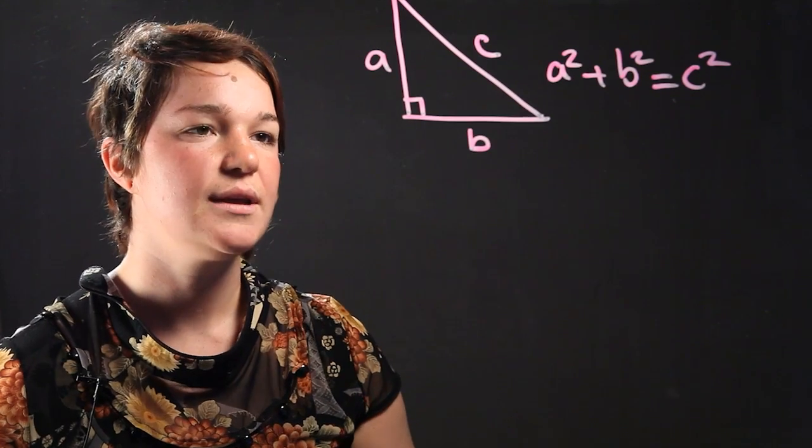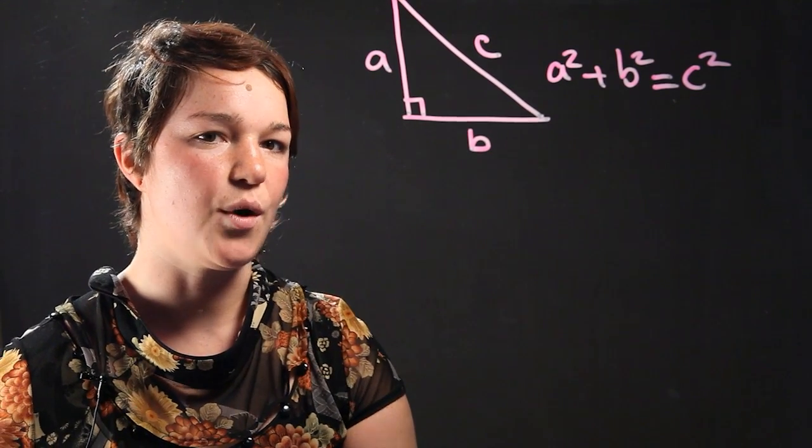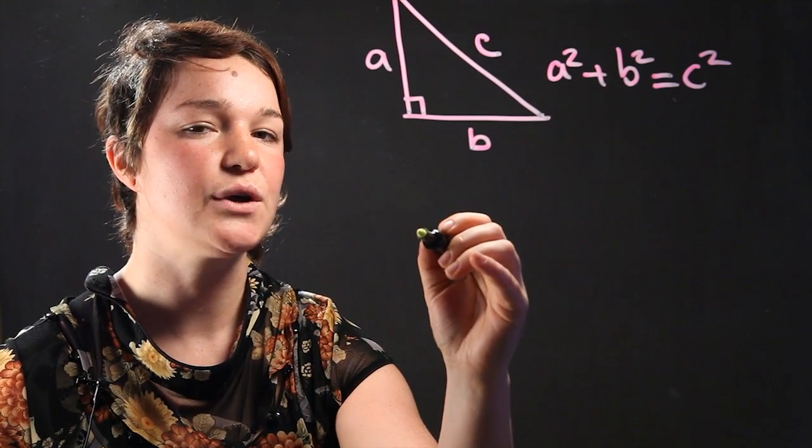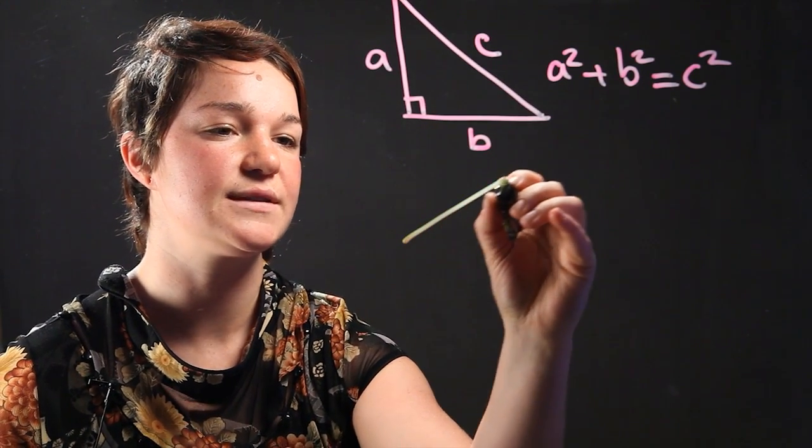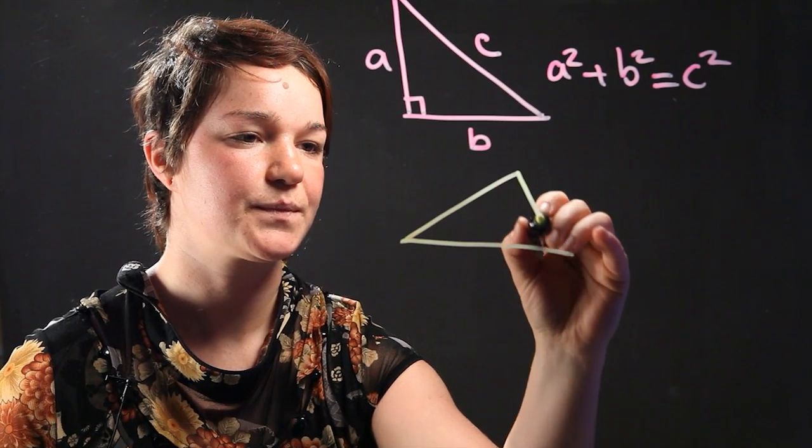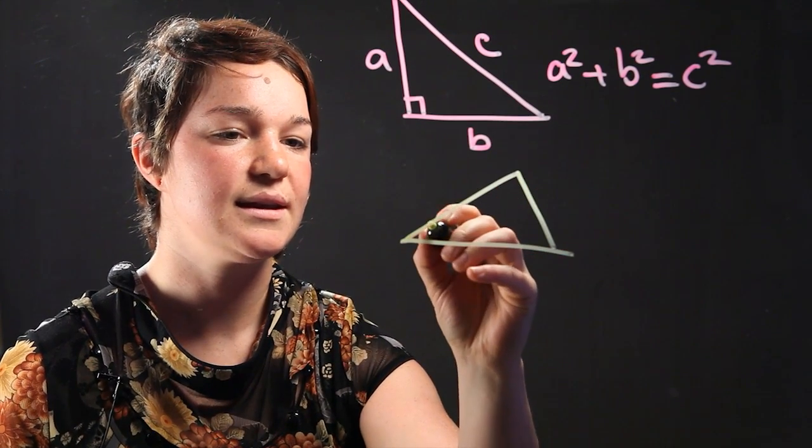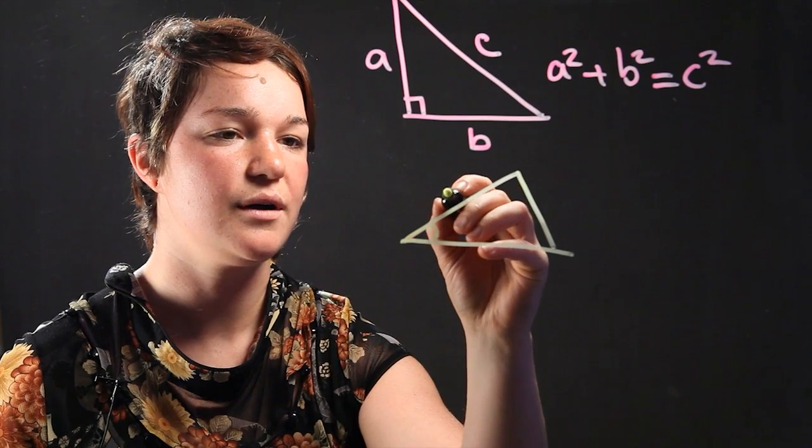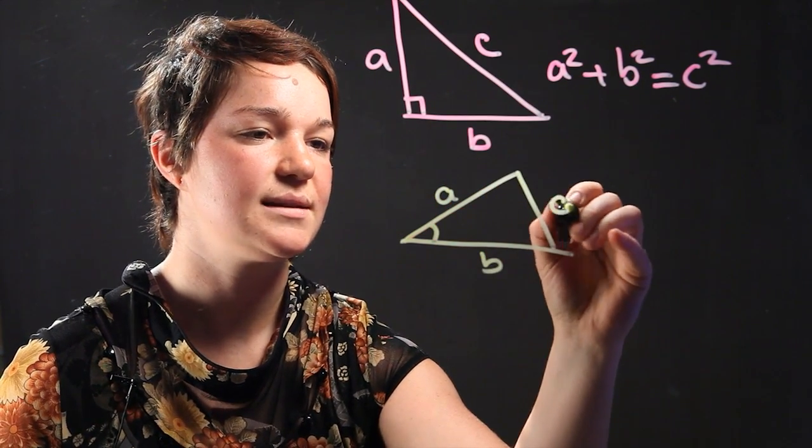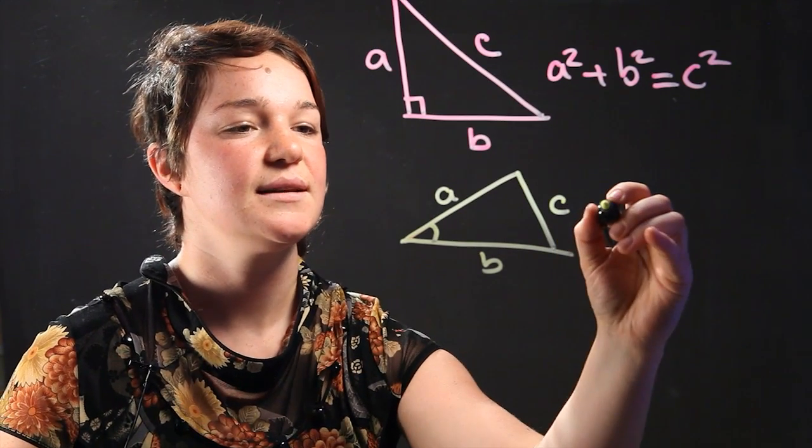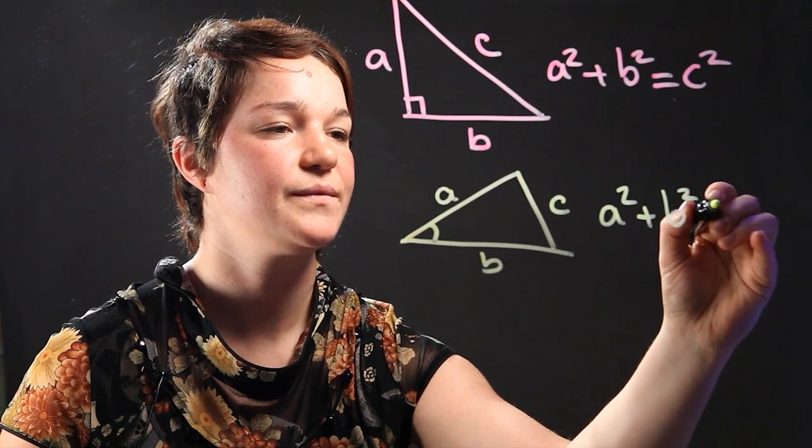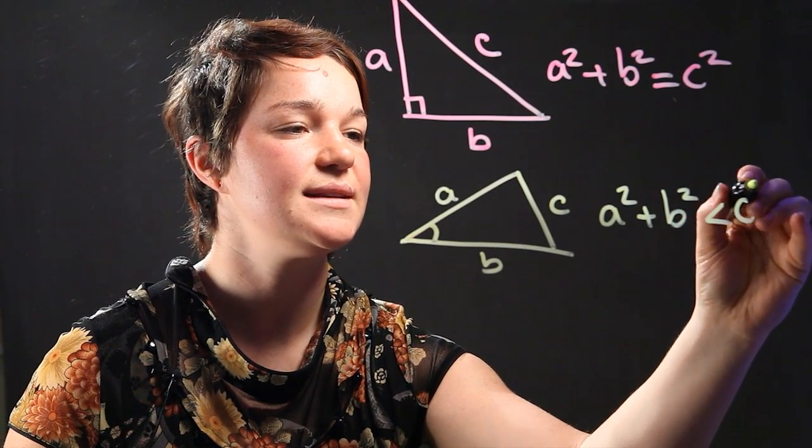Now, the Pythagorean Inequality deals with angles that are bigger or smaller than 90 degrees. So let's do an acute angle first. That means it's smaller than 90 degrees. And here's our acute angle, and we'll call these A, B, and C. What this says is that A squared plus B squared has to be smaller than C squared.